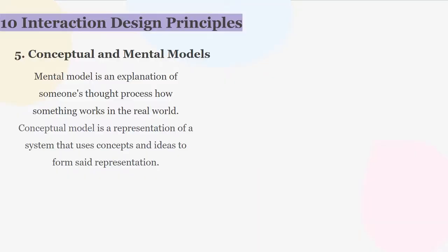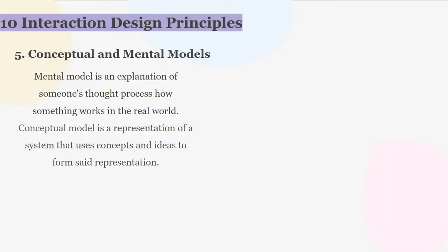Number five is conceptual and mental models, which are extremely important in order to make a design discoverable and easier to understand. A mental model is an explanation of someone's thought process about how something works in the real world. Mental models differ from person to person based on how they have interacted with the world, and users base their predictions about how an interface works on their mental models. A conceptual model is a representation of a system that uses concepts and ideas to form that representation.